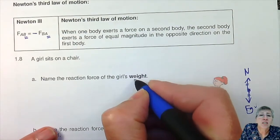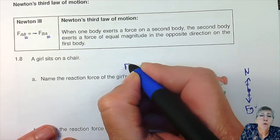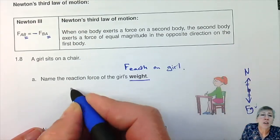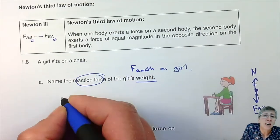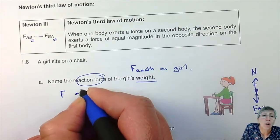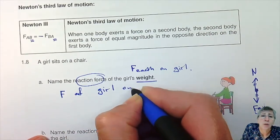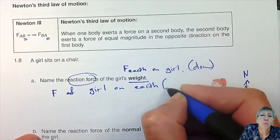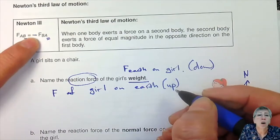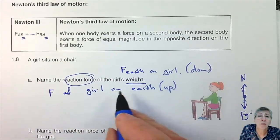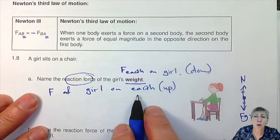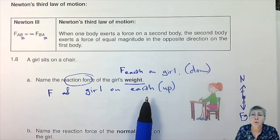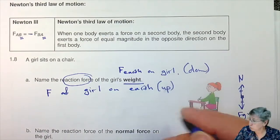Weight is the force of the earth on the girl. So if they ask for the reaction force of that, it should be the force of the girl on the earth. Weight is downwards, so this reaction force will be upwards — it's always in the opposite direction. You might have a problem with the idea that the girl is exerting an attraction on the earth — she's pulling the earth up — but we don't see the earth falling towards her; we see the girl falling towards the earth.